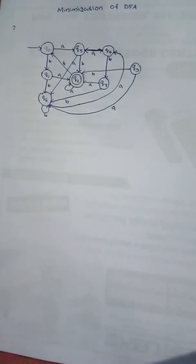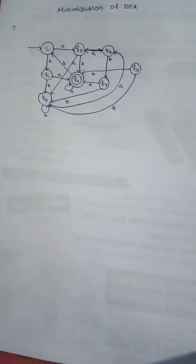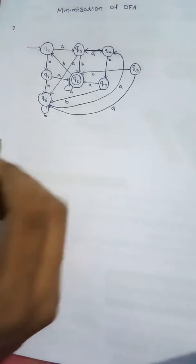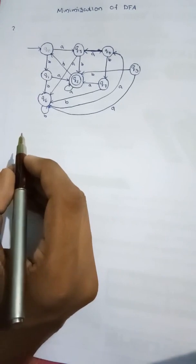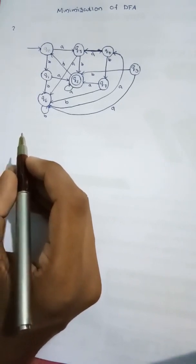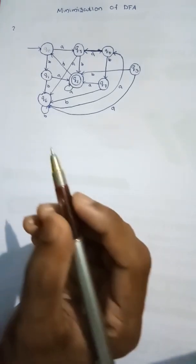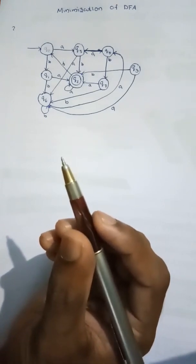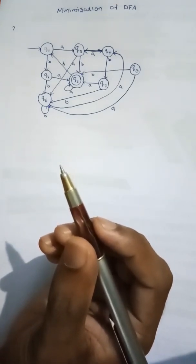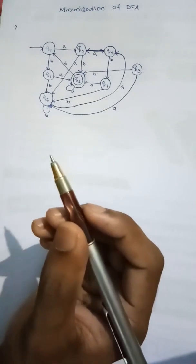First, we are going to check this DFA. Now, we are going to minimize it. We are going to check the steps. First, we are going to construct a transition table for the DFA. That is the minimizer. So, we are going to learn to see the transition table.